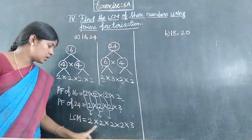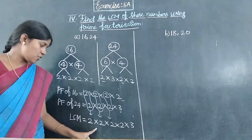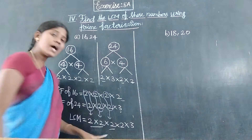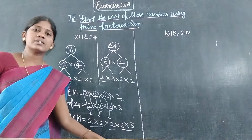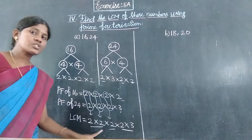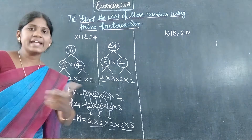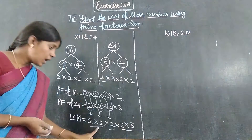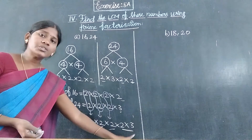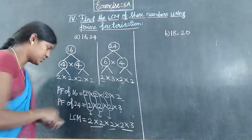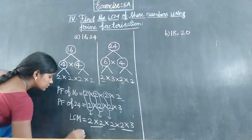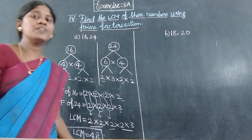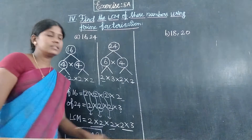So for LCM: two twos are 4, four twos are 8. Next, 2 and 3: two threes are 6. So six eights are 48. Therefore LCM equals 48.